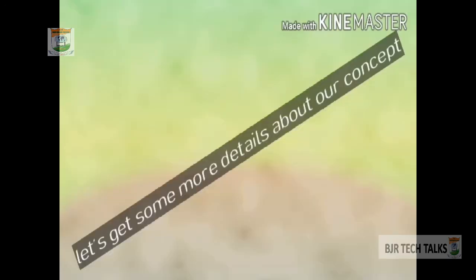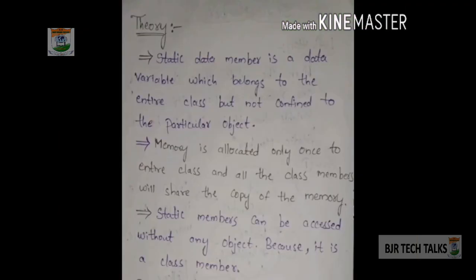It is not separately given. Let us get some more details about our concept. A static data member is a data variable which belongs to the entire class but not confined to a particular object. Confined means not reflected or not bounded to a particular object — it reflects in the same manner to all the objects. Memory is allocated only once to the entire class and all the class members will share the copy of the memory. Static members can be accessed without any object because it is a class member.